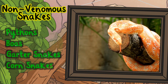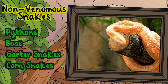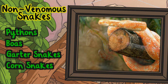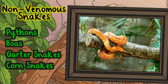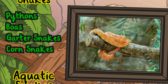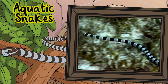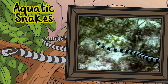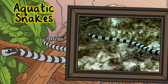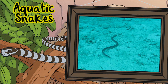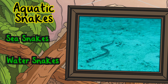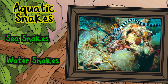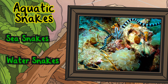Non-venomous snakes include pythons, boas, garter snakes, and corn snakes. Aquatic snakes: these snakes have adapted to living in or near water. These types of snakes include sea snakes and water snakes.